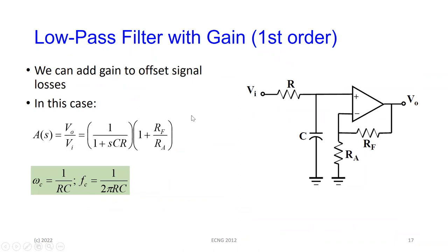The RC network may have some losses, so we can add gain using the op-amp — that's the beauty of the active filter. As a non-inverting amplifier we add a feedback resistor and a ground resistor to get gain. We typically restrict the gain to no more than three; it has to do with stability — you can get a gain up to three without affecting the circuit response too much. The cutoff frequencies are given both in radians per second and in hertz.